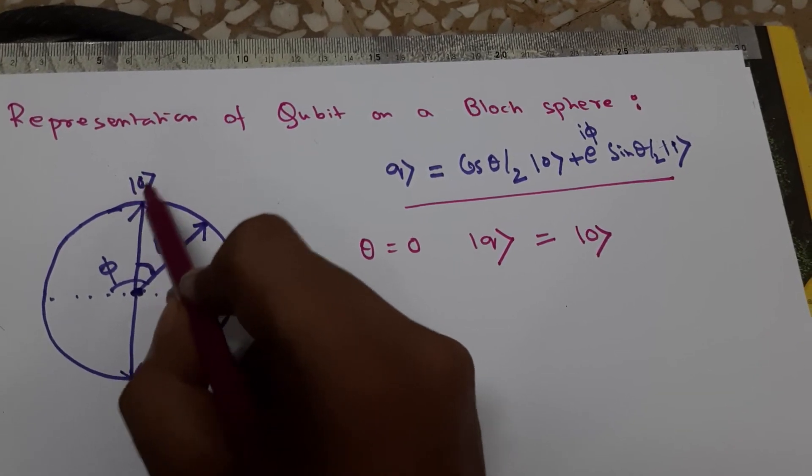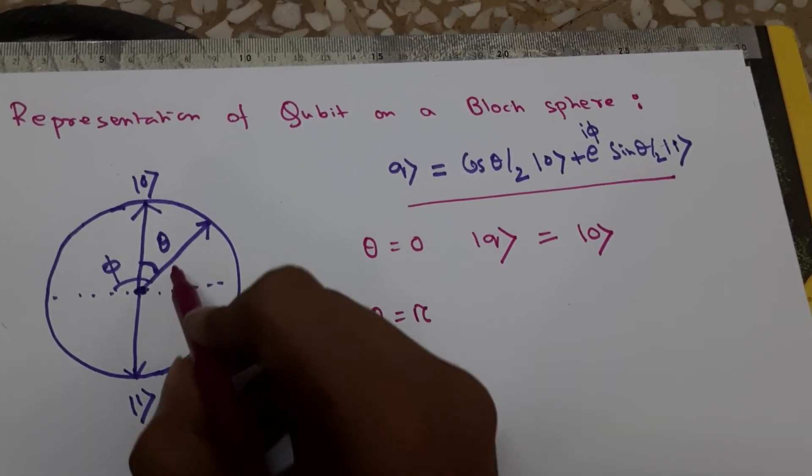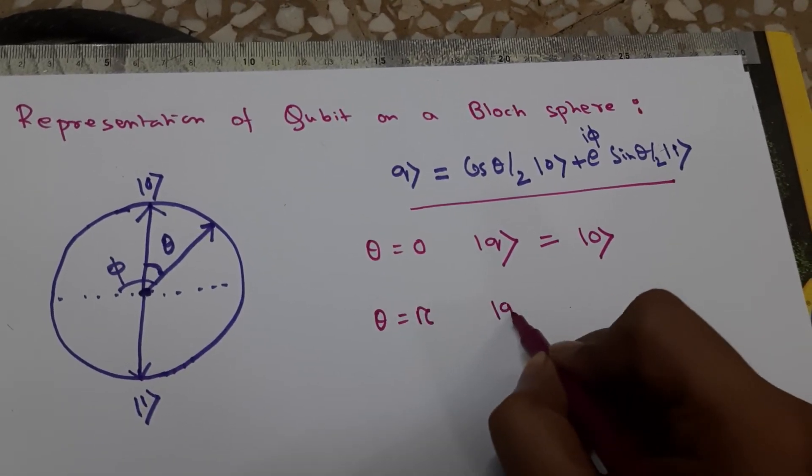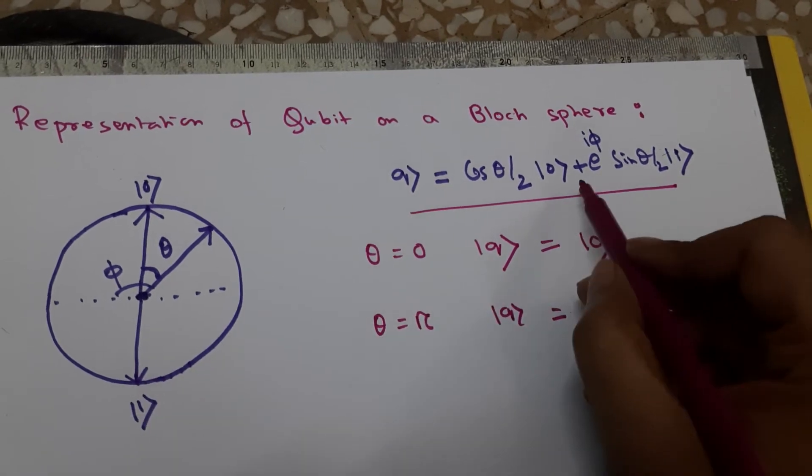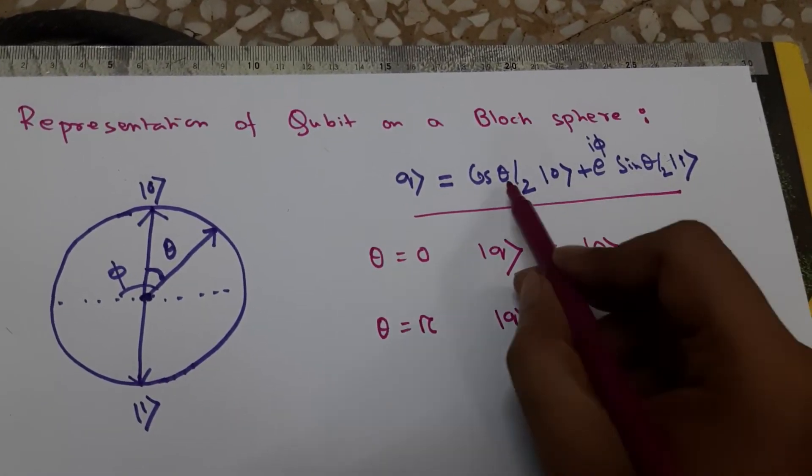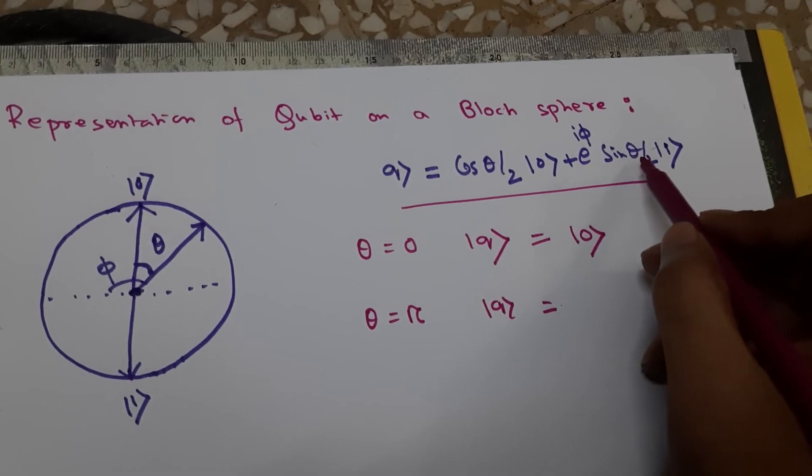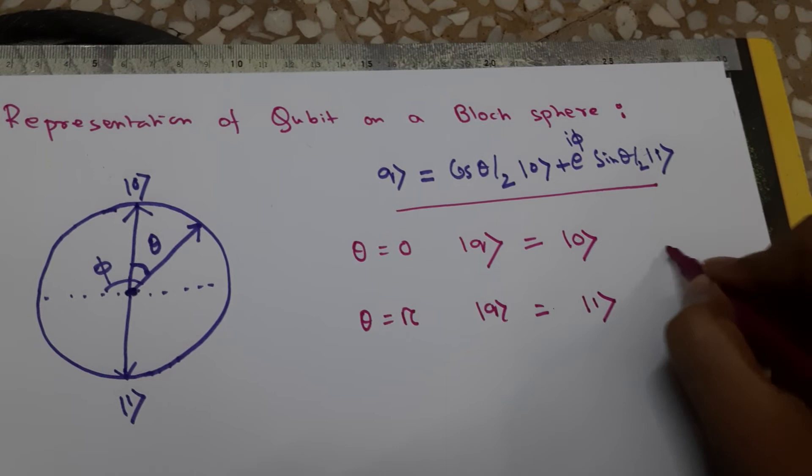We can see if theta is 0, then this merges with this line, so it collapses to the |0⟩ state. If theta is pi, when it is this total angle, then the qubit is...